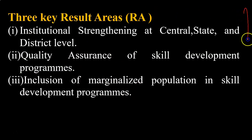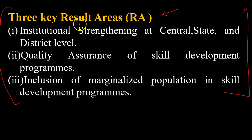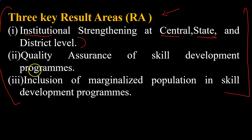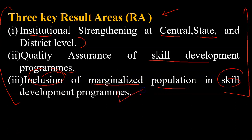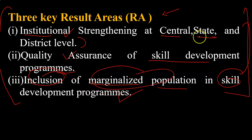There are three key result areas on which Sankalp will work. First, it will strengthen institutions at the central, state, and district level. Second, it will ensure quality assurance of skill development programs. Third, it will include the marginalized population in skill development programs. These three — strengthening of institutions, quality assurance, and inclusion of marginalized populations — are the main aims of this central scheme.